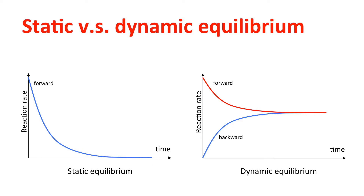Next, we study the graph of reaction rate against time. For static equilibrium, there is only one line — the forward reaction. As the reactant's concentration drops, the forward reaction rate also drops, and eventually the reaction rate becomes zero, meaning the reaction has stopped. For dynamic equilibrium, at first the forward reaction rate decreases. At the same time, the backward reaction rate increases because the product's concentration rises gradually. Finally, both forward and backward reaction rates become equal at a certain point, but that point does not equal zero, so there is no net change in concentration.